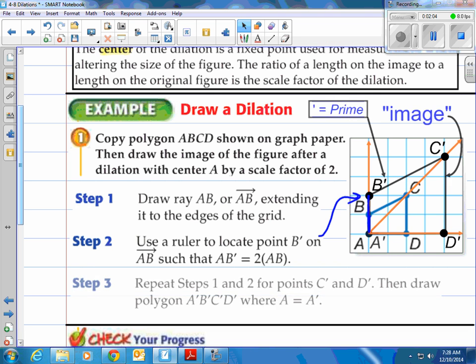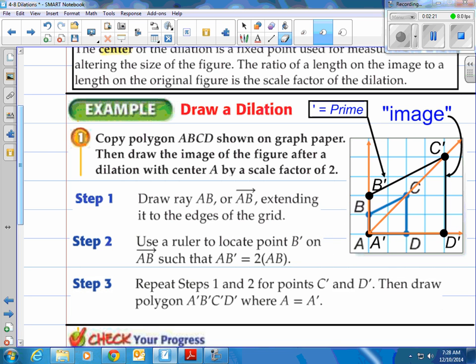Lastly, repeat all those steps for C and D. A will actually stay in that same location and then draw a polygon A prime, B prime, C prime, D prime. Notice the primes are on the image which is the second figure we draw. So the image in black there is the one that we're actually drawing with a scale factor of two. So you notice it's actually two times larger than the original.